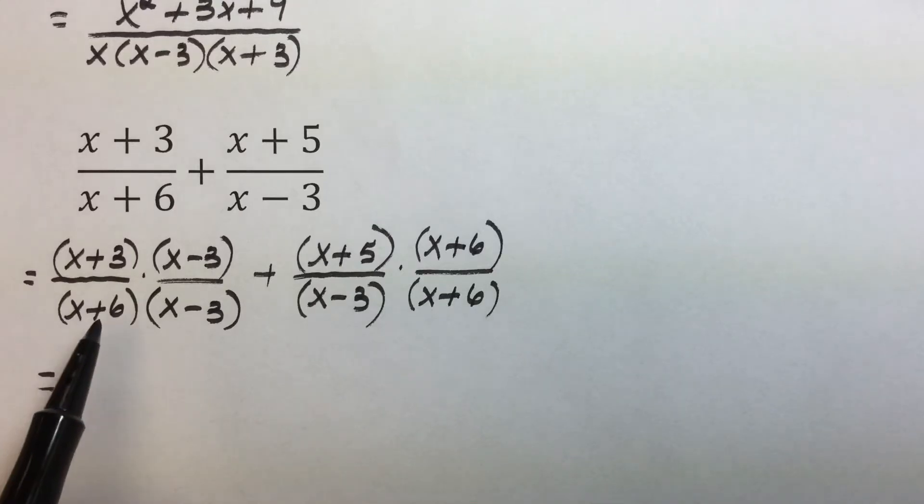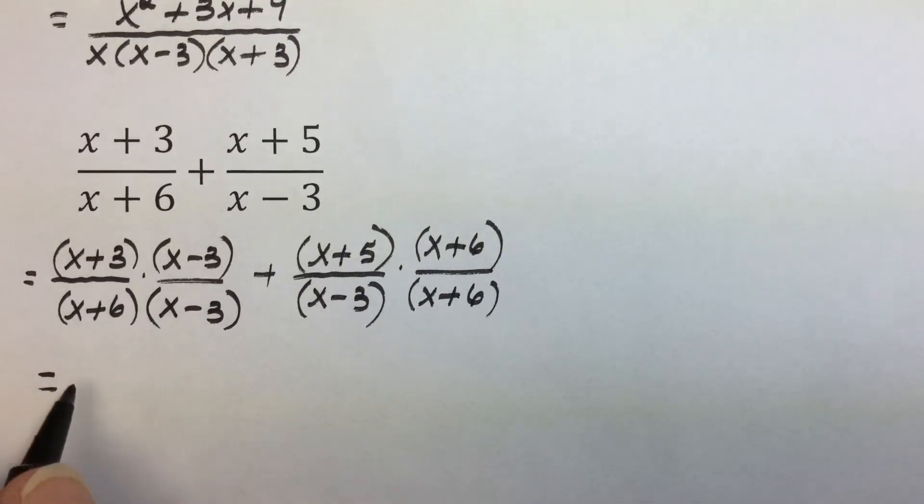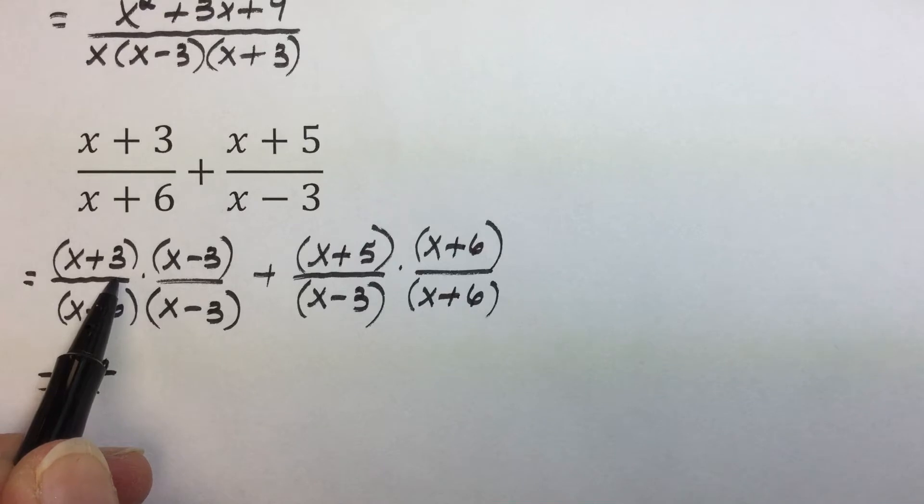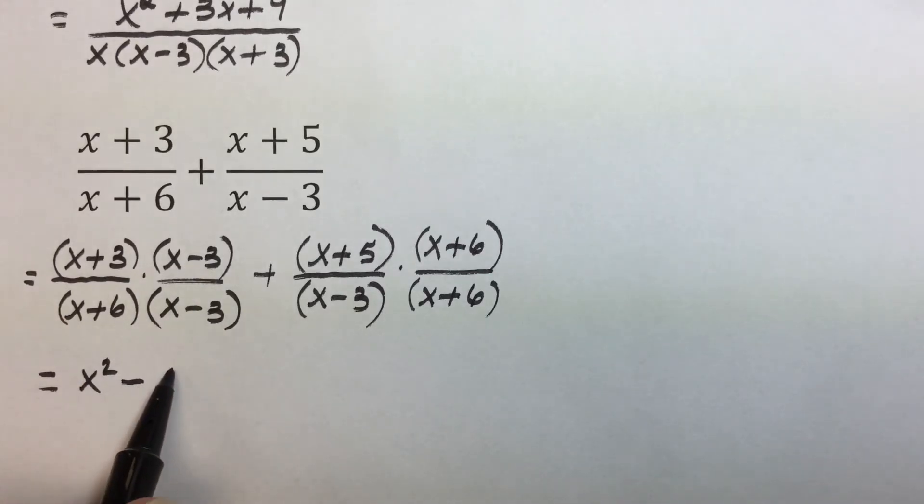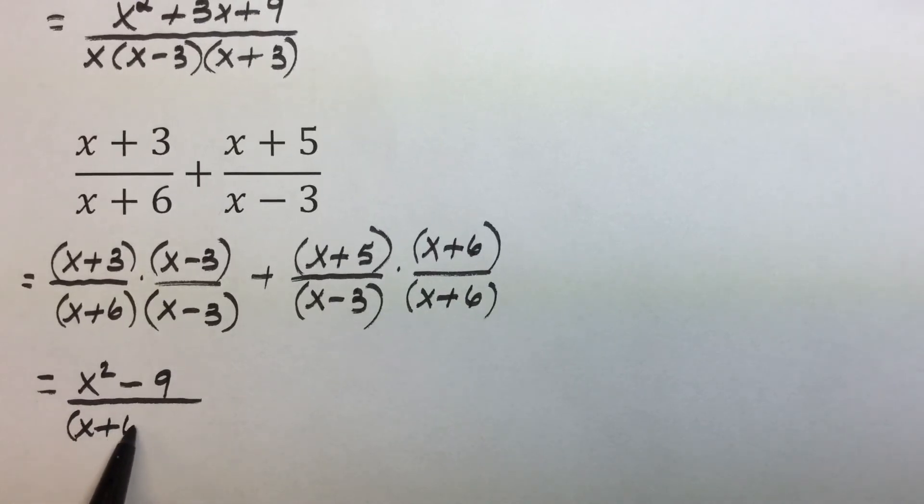Next course is to simplify by performing the multiplication. We'll use FOIL method in the numerator. Here, x times x, first terms gives us x squared. Outer terms would be a negative 3x, inner would be a positive 3x, which are additive inverses, and then last terms multiplied together is a negative 9 over the common denominator of x plus 6 times x minus 3.